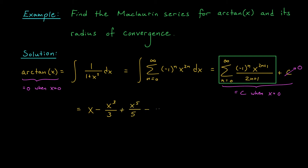What about the radius of convergence? We saw that the series for 1 over 1 plus x squared had a radius of r equals 1, and the radius won't change under integration. So with no work at all, we find that the radius of convergence for our new series is r equals 1. Incredible! We were able to do this so quickly by using a few shortcuts.